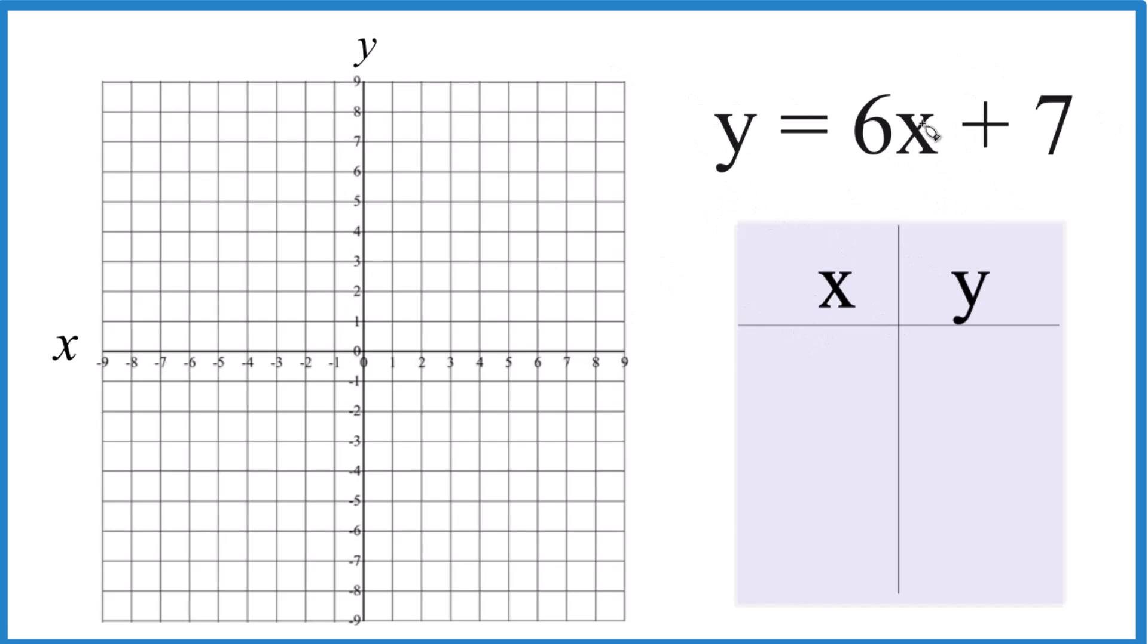I always like to start out with 0 here. So if x is 0, 6 times 0 is 0, 0 plus 7, that gives us 7 for y. We could put 1 in here, so we could just say 1. 6 times 1 is 6, 6 plus 7, that's 13, but my graph doesn't go up to 13, so I don't want to do that.